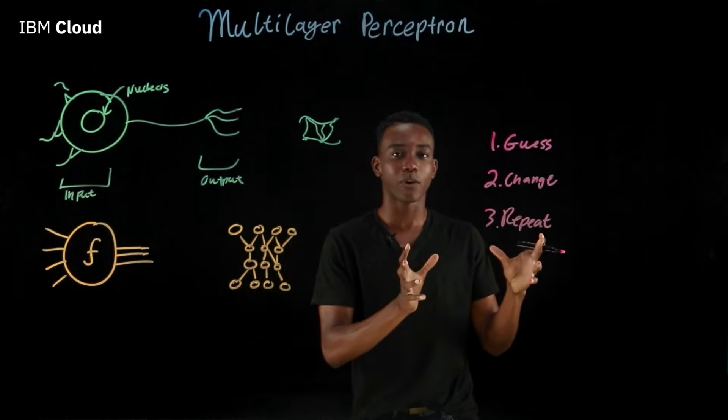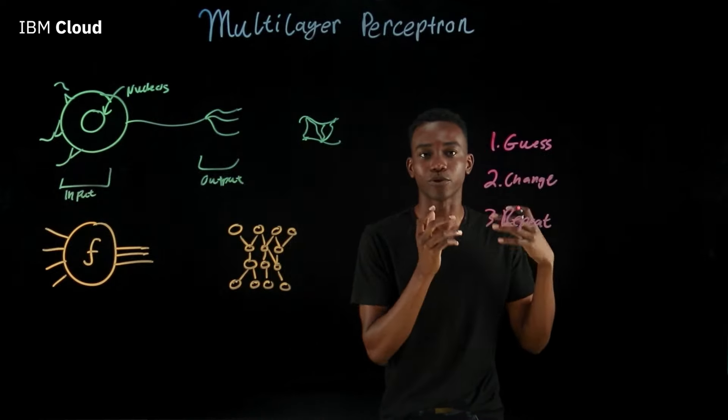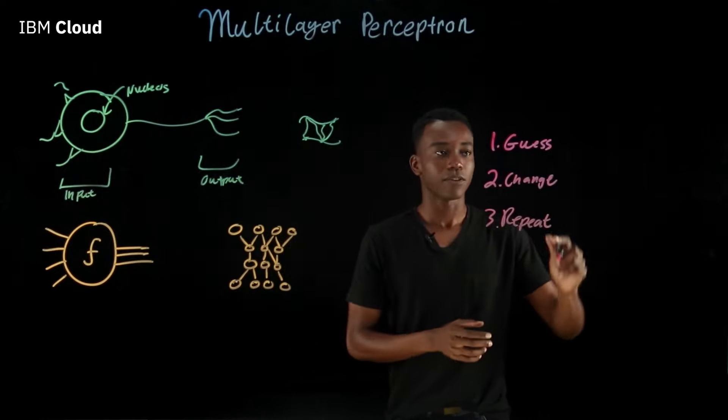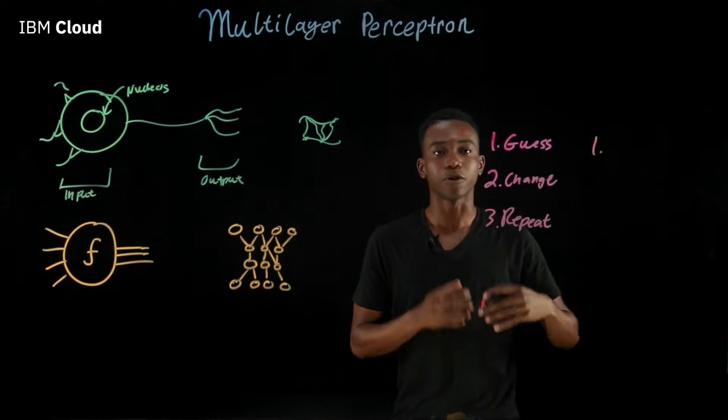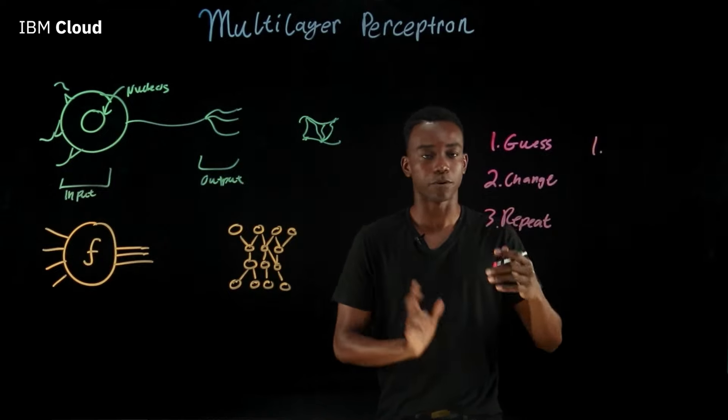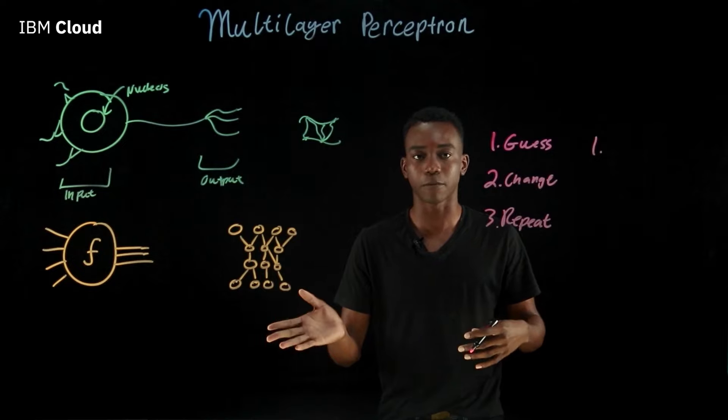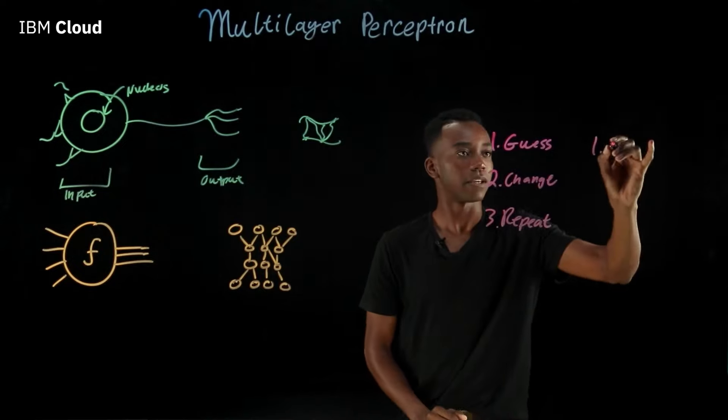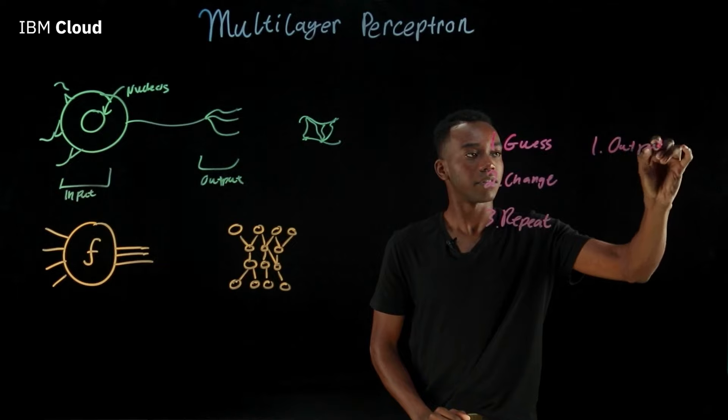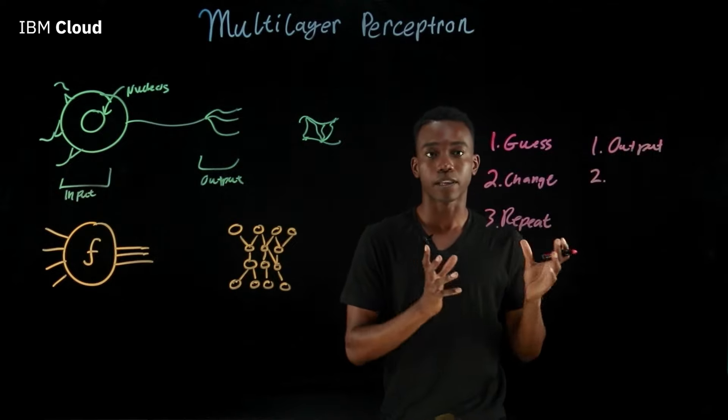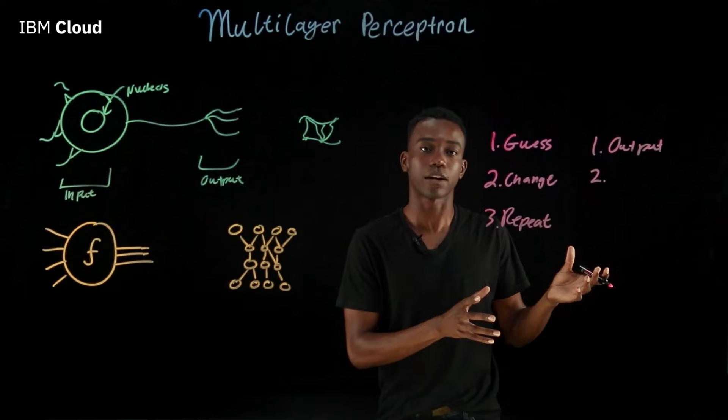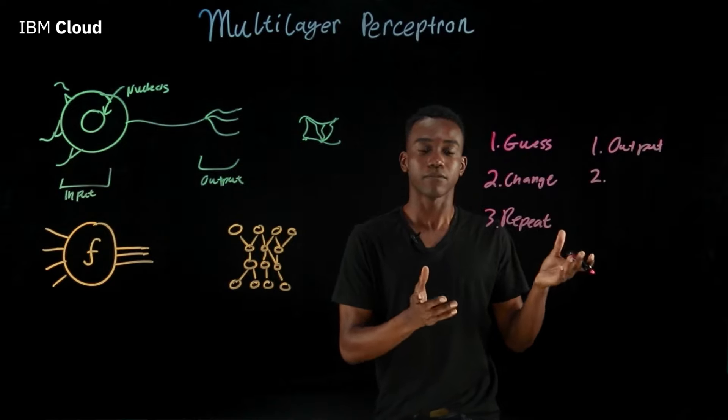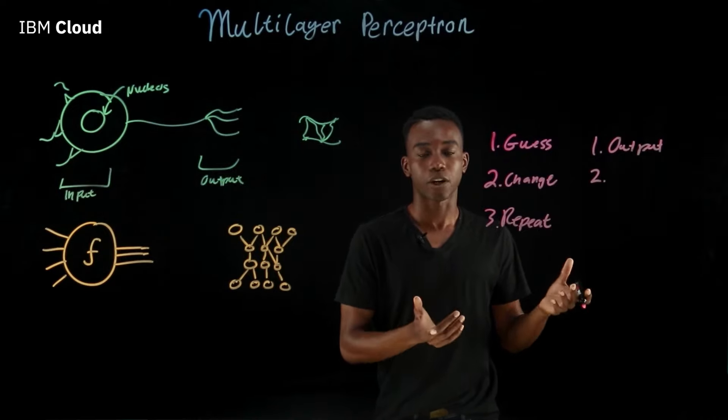This is basically the same way that scientists are able to train multilayer perceptrons. First of all, the multilayer perceptron gives an output. Based on the function, based on the inputs, it gives out an output. Very often that output is wrong and sometimes it's right. But based on that feedback, it has to change.